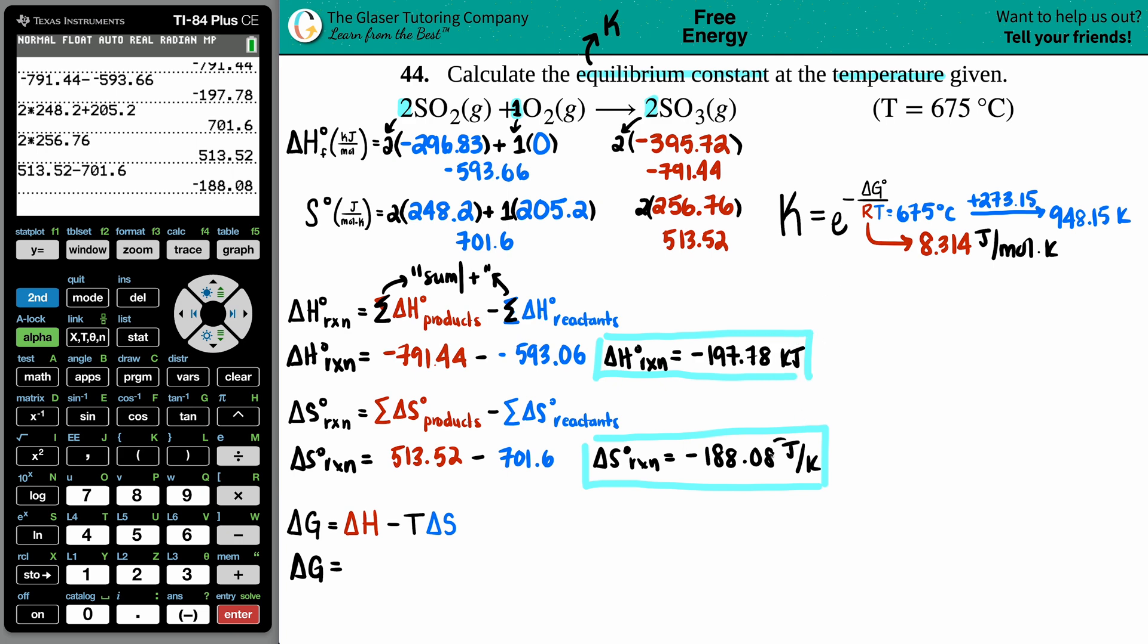Hold on - ΔH is in kilojoules, ΔS is in joules. They have to be the same unit. We'll look at what formula we're using next. The R value said the energy needed to be in joules, so ΔG has to be in joules. Convert kilojoules to joules by multiplying by thousand. This would be -197,780 joules.